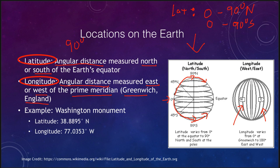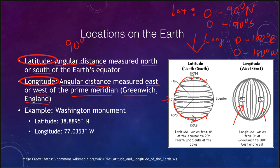Unlike the equator, which gives a consistent reference point for latitude, there is nothing inherently special about any one meridian for longitude — you need to select one as your reference point. If you go east of the prime meridian you have an east longitude; if you travel west, you have a west longitude. The longitude can vary from zero to 180 degrees east, or zero to 180 degrees west of the prime meridian.